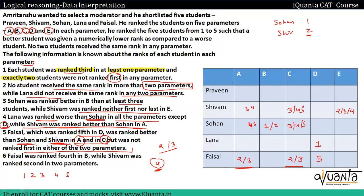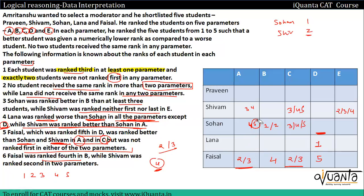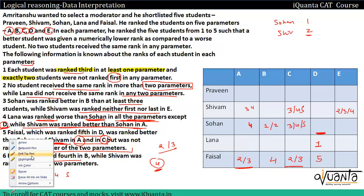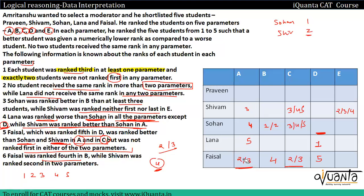Faisal was ranked fourth in B, and Shivam was ranked second in two parameters. Now, Lana was ranked worse than Sohan in all parameters except D. So in parameters other than D, Sohan's rank cannot be five — because then Lana would need a rank worse than five, which is impossible. Therefore Sohan's rank in those parameters is at most four, and Lana gets rank five there.